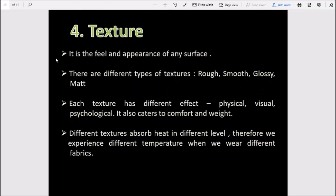There are different types of textures: rough, smooth, glossy, matte. Each texture has different effects - physical, visual, psychological. It affects comfort and weight. If we see satin, it has a slippery feel. Similarly, cotton clothing has a different feel. Different textures absorb heat at different levels. Cotton breathes, so we prefer it in summer. Wool absorbs heat, so we prefer it in winter. Therefore, we experience different temperatures when we wear different fabrics.